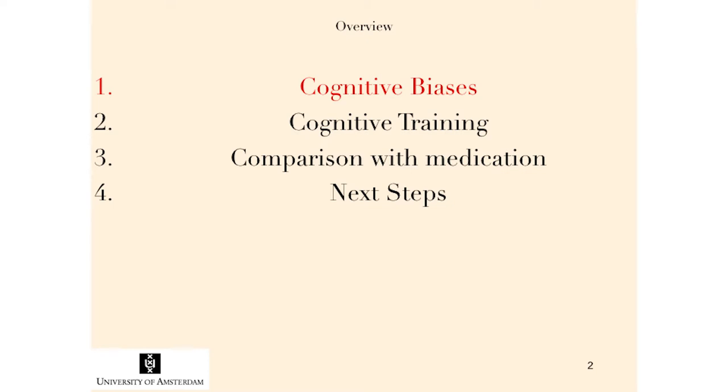Thank you Vic, and thanks for the invitation. I'm having a sabbatical in Australia and a very nice time thinking about how we can move on with training, and this is one of the other centers which is really important in that respect. My basic point is to tell you about where we are in the field of cognitive training in general in relation to addictions. I'll talk first about cognitive biases, what they are and why we should want to change them, then on cognitive training, and then a comparison with medication to see how strong the effects are compared to medication in addiction, and then some talk about next steps.